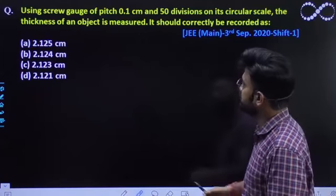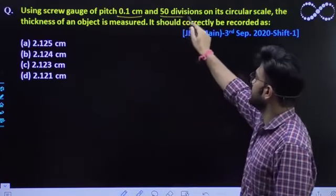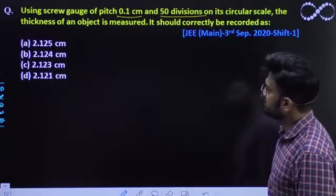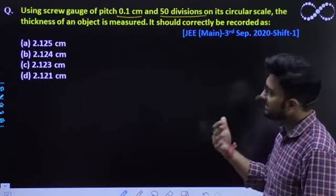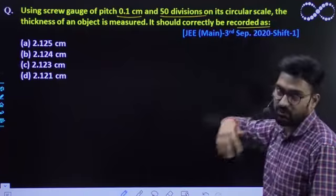Using screw gauge of pitch, which already aapko given hai, which is 0.1 centimeter and having 50 divisions on its circular scale. The thickness of the object is measured. Thickness object ka measure kar raho aap. It should be correctly be recorded as. Toh kya hona chahiye actual mein reading.